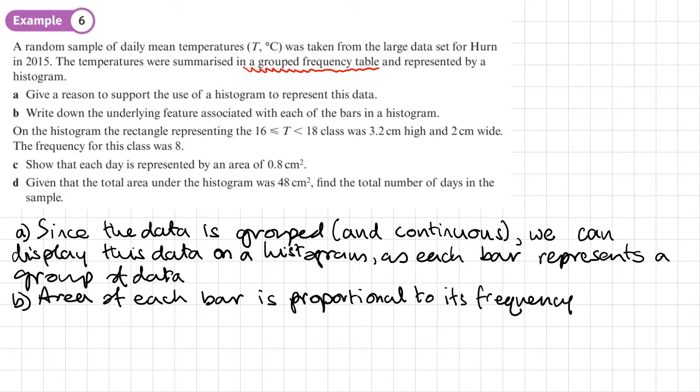Okay, let's move on to part C. So before we get to part C, it says on a histogram, the rectangle representing the temperature 16 to 18 was 3.2 centimeters high and 2 centimeters wide. The frequency for this class was 8. Show that each day is represented by an area of 0.8 centimeters squared.